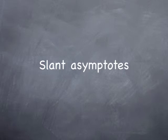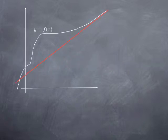We have seen in the previous video that we can have horizontal asymptotes, vertical asymptotes, but also a slant line that is an asymptote for a function. Looking at an example where the red line is an asymptote for the function f: because the red line is neither horizontal nor vertical, it has a non-zero slope a. The horizontal and vertical cases were already covered in the previous video.